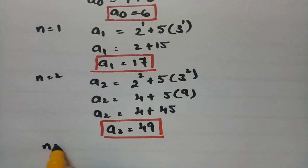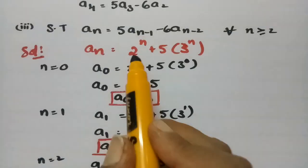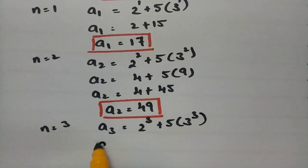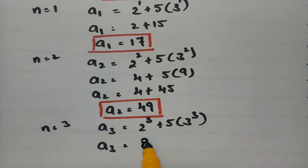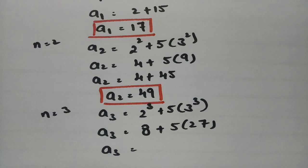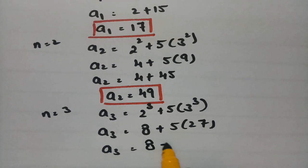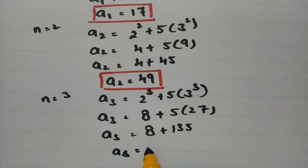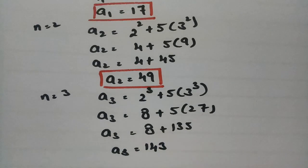For a_3, we put n equal to 3. So a_3 equals 2^3 plus 5 times 3^3, which is 8 plus 5 times 27. Since 27 times 5 equals 135, we get 8 plus 135. So a_3 equals 143.